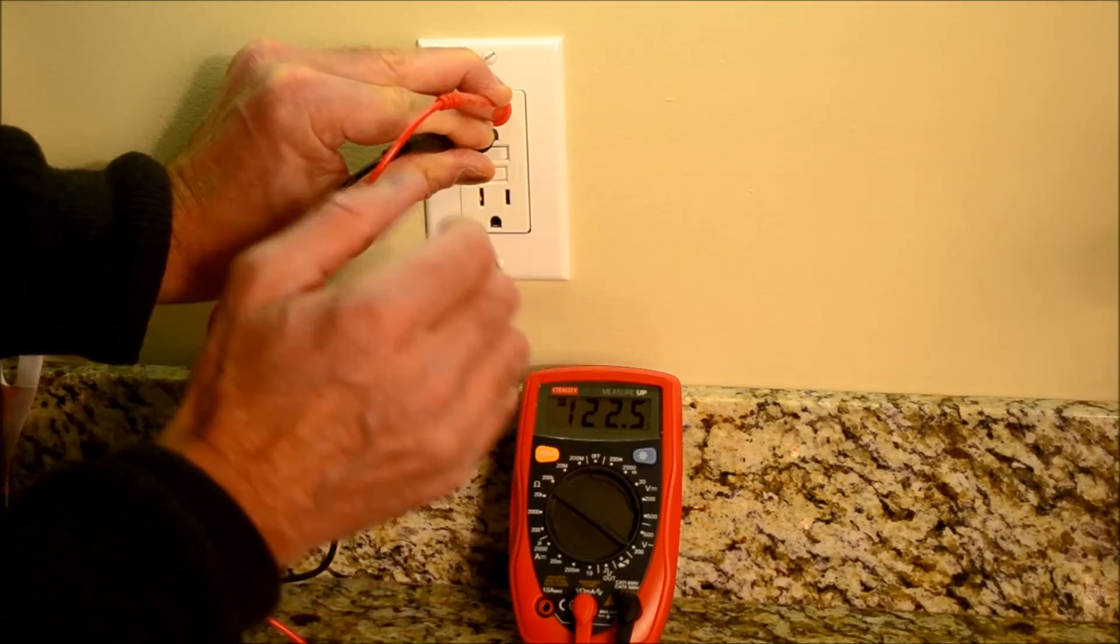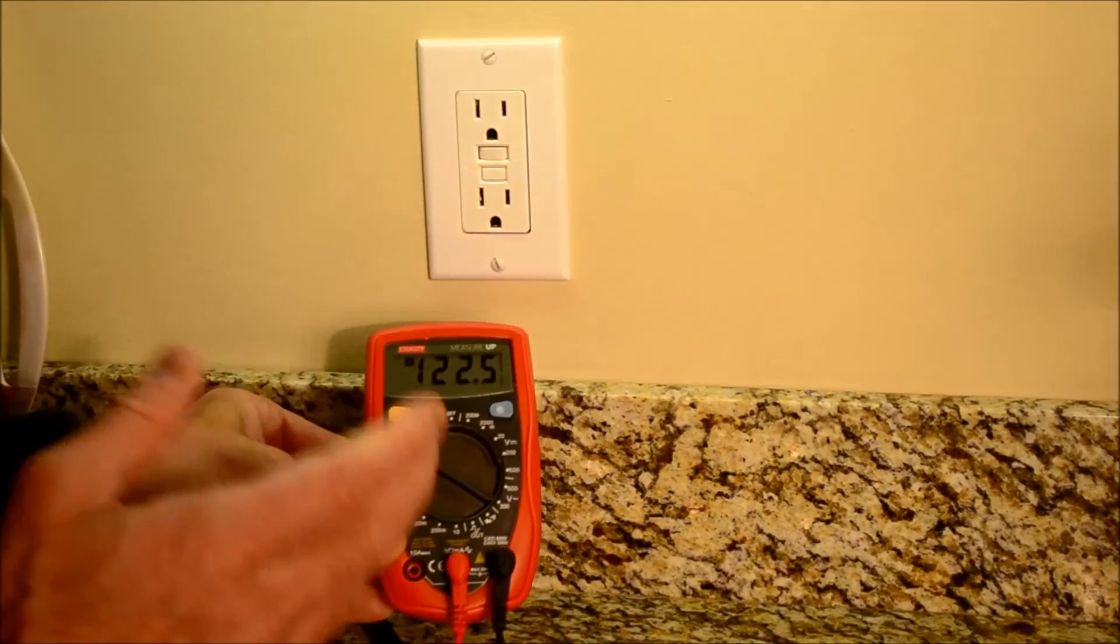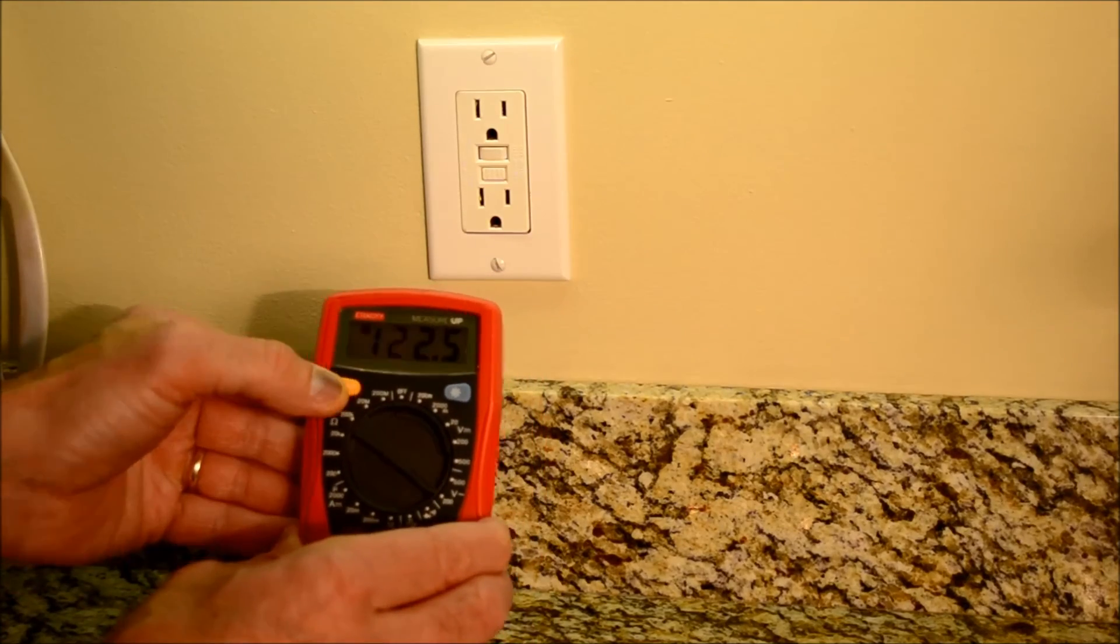I can hit the hold button and now I can remove the probes and you'll see I've got 122.5 volts. When I'm finished making my measurement I can then clear it out.